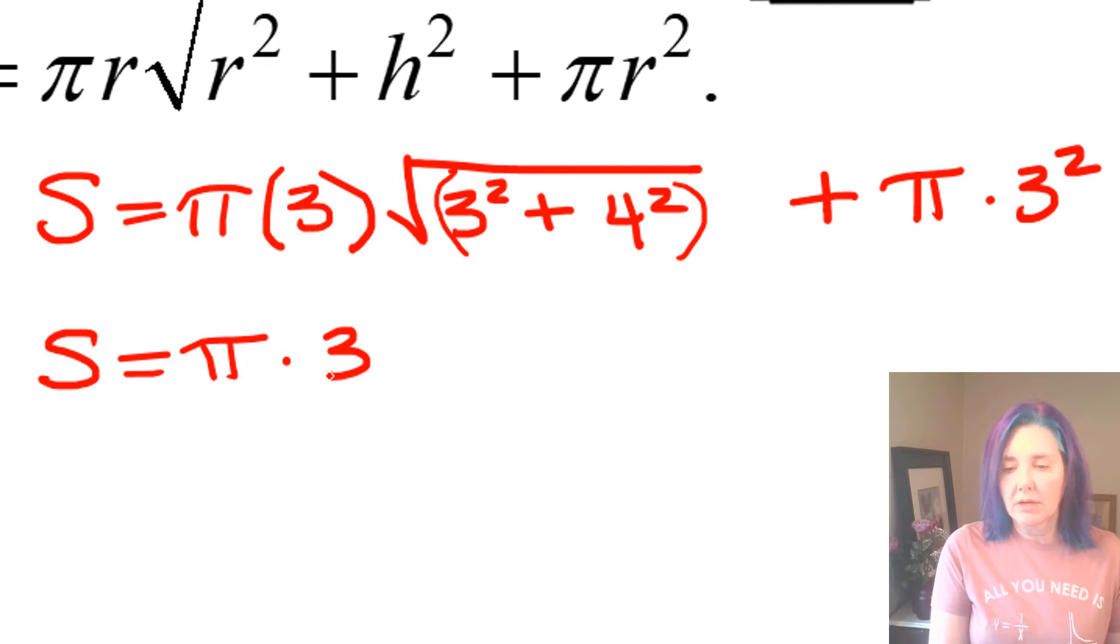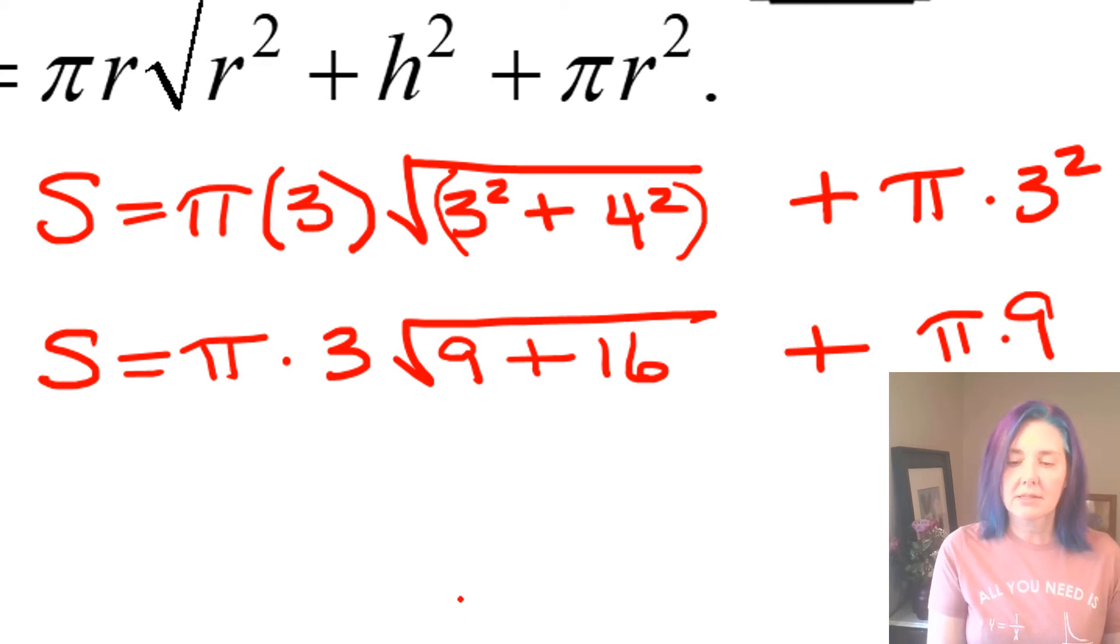We have pi times three times the square root of three squared, which is three times three or nine, plus four squared, which is four times four is 16, plus over here we have pi times three squared again, so that's nine.